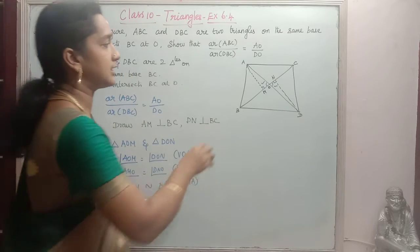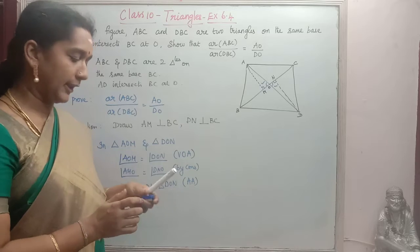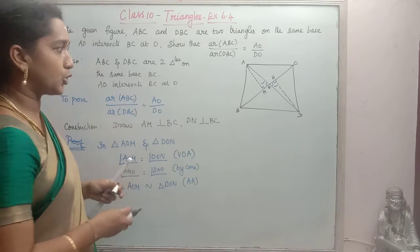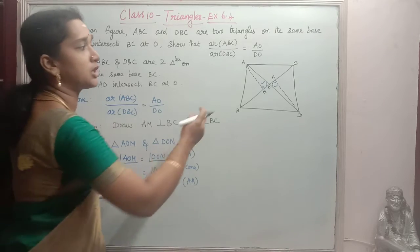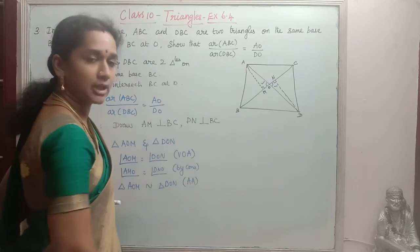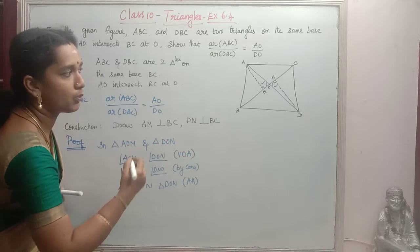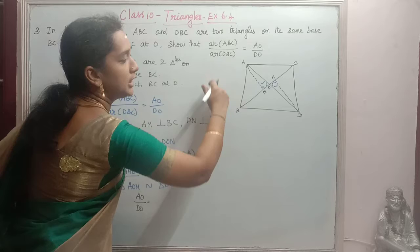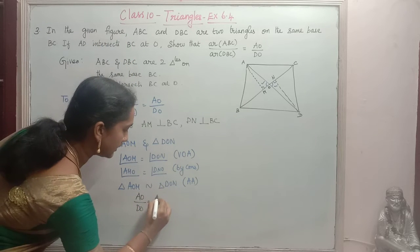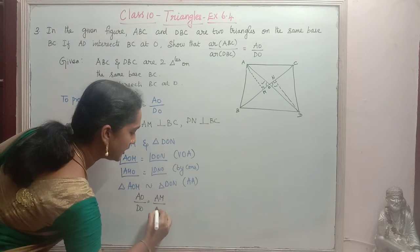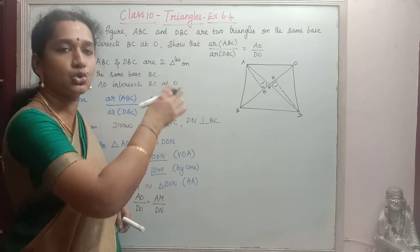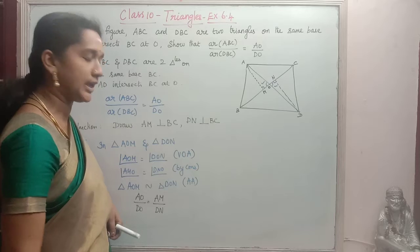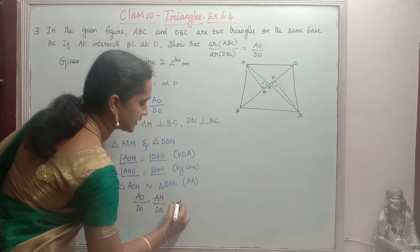By AA similarity, triangle AOM is similar to triangle DON. Since the triangles are similar, their sides are proportional. Therefore AO by DO is equal to AM by DN. We will take this as equation 1.